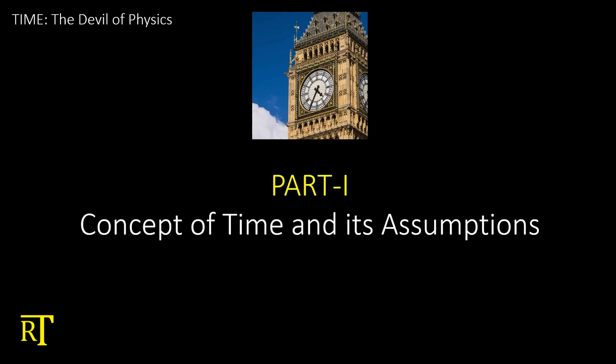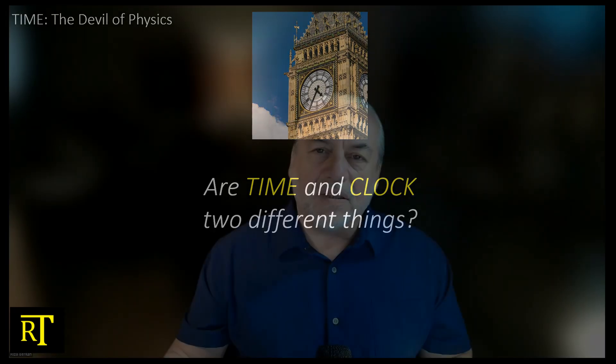We will start with the classical concept of time and the assumptions behind it. The very first question we will ask is this: Are time and clock two different things? Clock is supposed to be measuring time. But is it really measuring time? And that's the main investigation in this whole video series. Just this. Are time and clock two different things? Or are they the same thing?